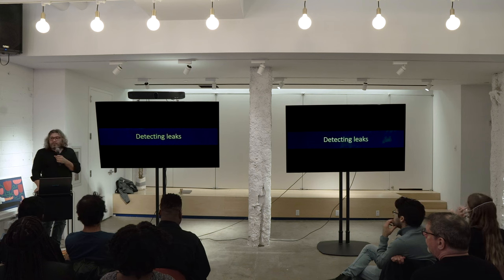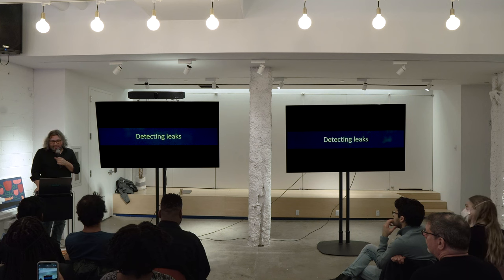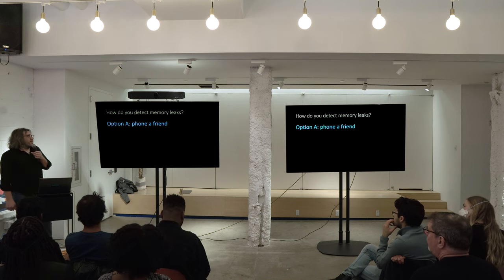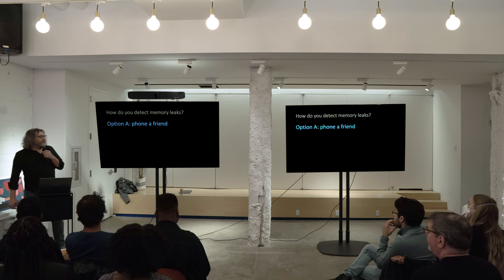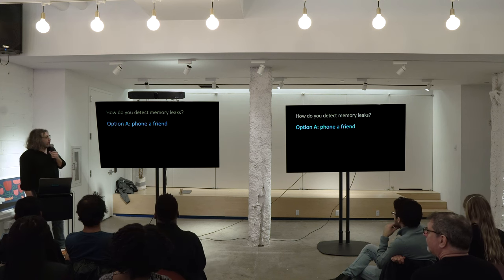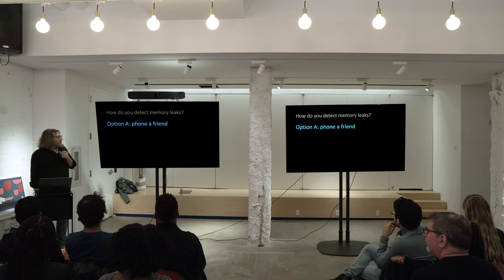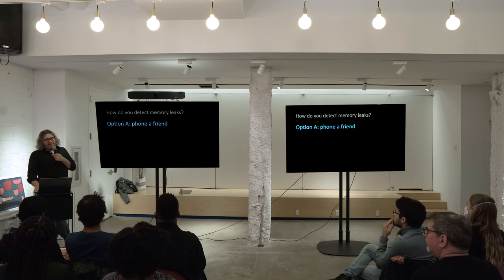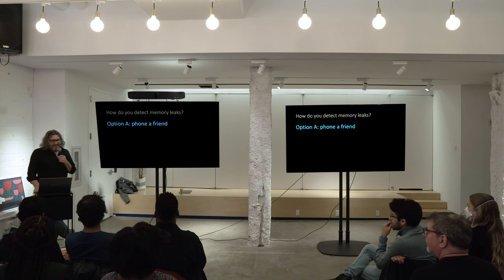So let's say you've implemented this and you have a problem with leaking, just like everybody else. What do you do? Option A: you call a friend, somebody who knows about memory leaks, and he or she comes with their expertise and finds the leak and fixes it. And guess what? There's not only one leak, and next week there's going to be two more. So that's not really a viable option.